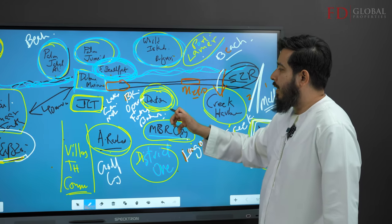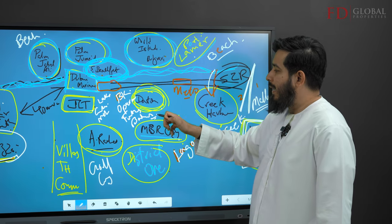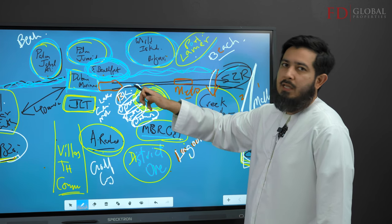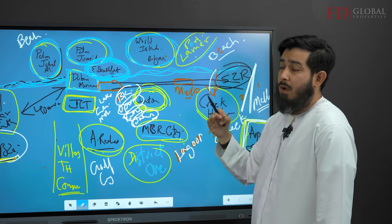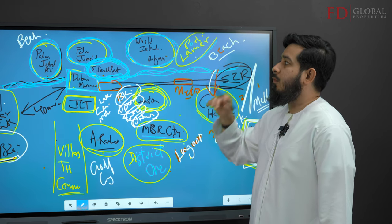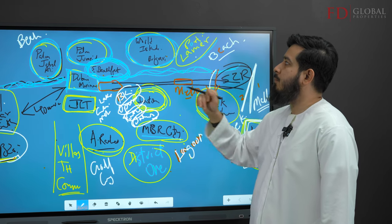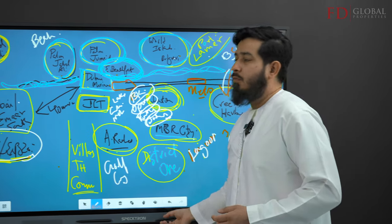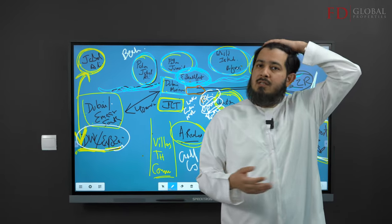So just want to give you a quick overview of what are the main landmarks when you're investing. In Downtown, you know that you've got four main anchors: Boulevard, fountain, Opera House, and Burj Khalifa. Watch my Downtown video. When you're doing Palm Jebel Ali, Palm Jumeirah, Emaar Beachfront, World Islands, you know that anything sea-facing, generally property prices go up.